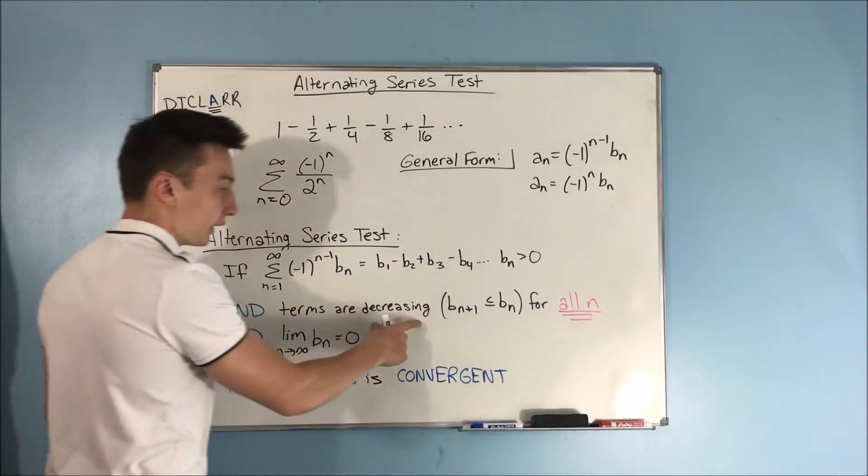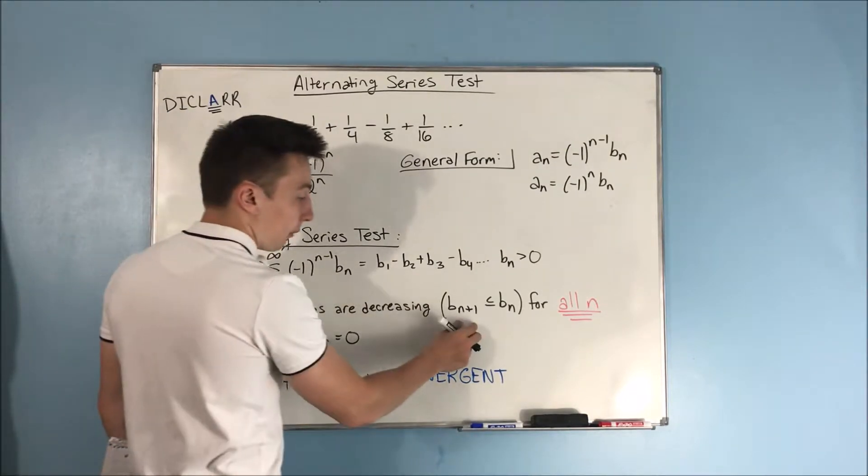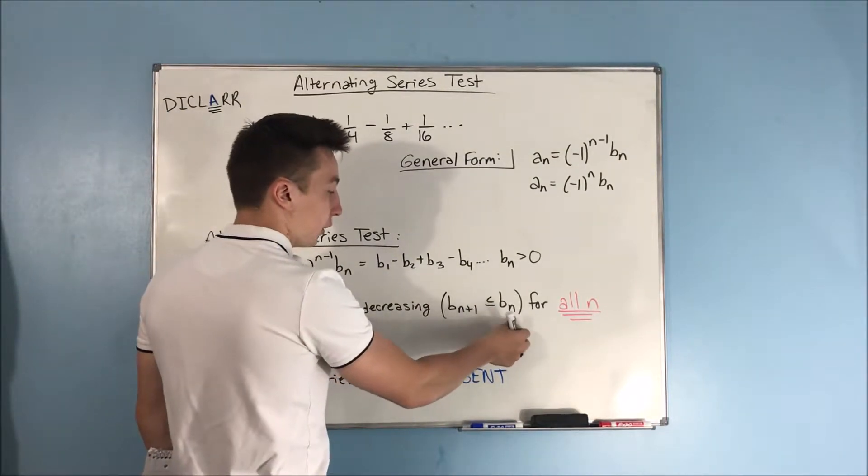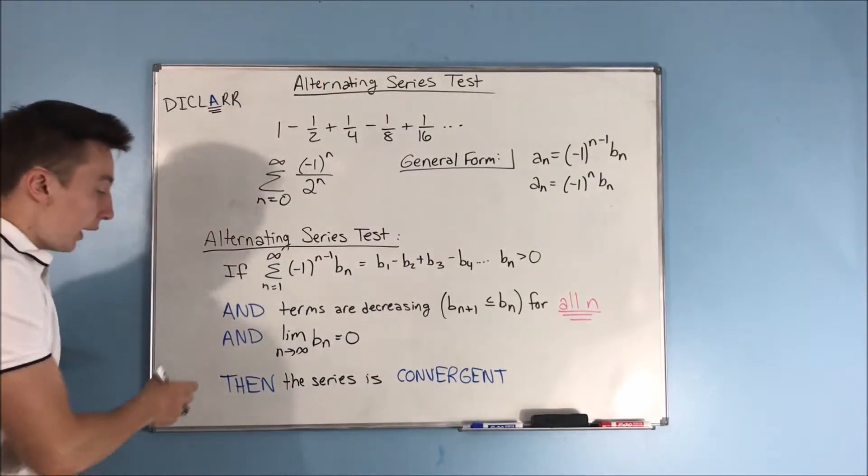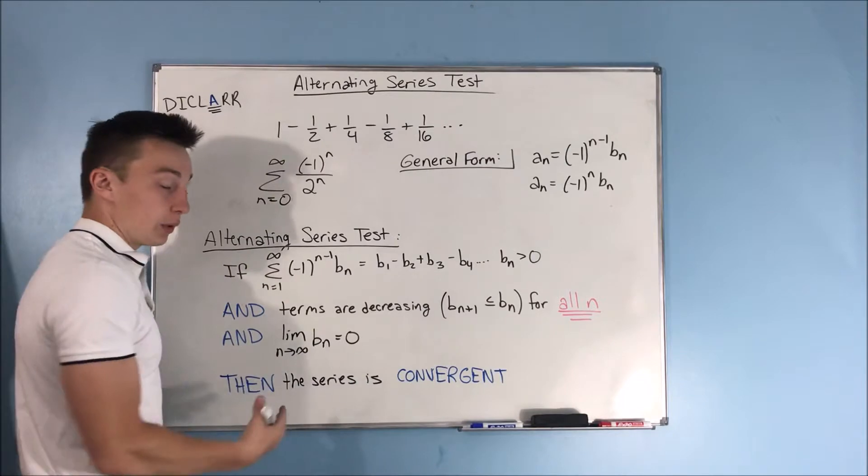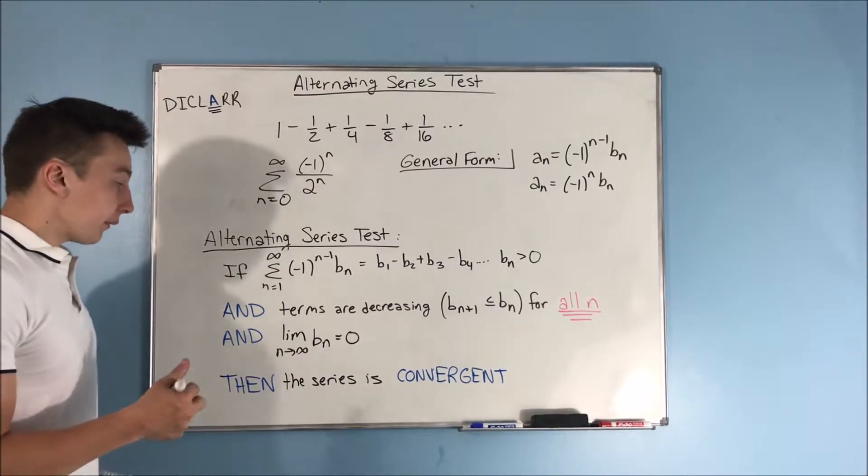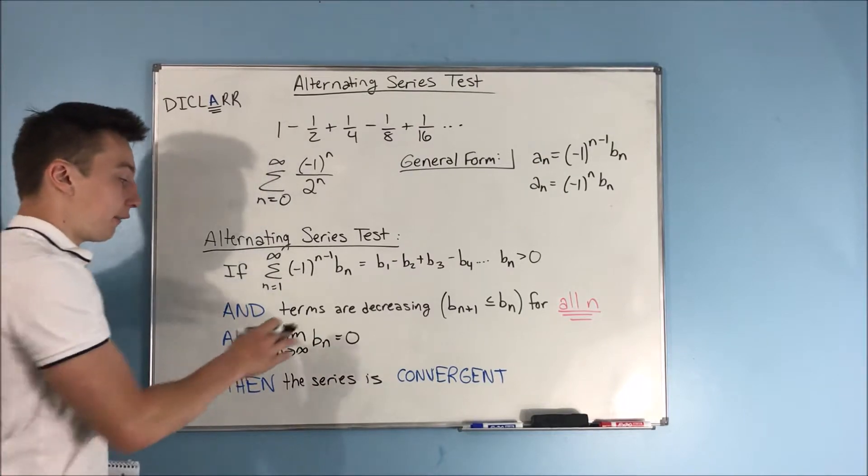And you have decreasing terms. When we say that, we're referring to the b sub n, right? b sub n plus 1 is less than or equal to b sub n for all n. And you have the limit as n approaches infinity of b sub n equal to 0, then you know that this series is convergent.